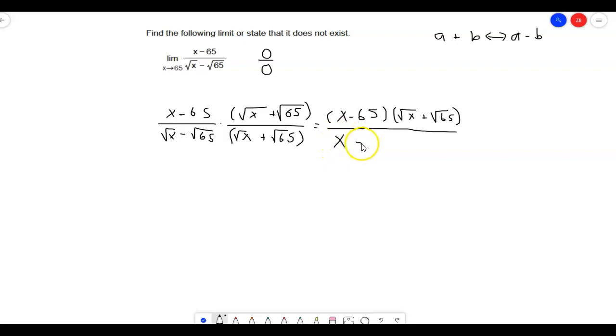And then we have a minus. And then the last term squared. So the square root of 65 times the square root of 65 is just 65. So hey, what do you know? We have a common term on the top and the bottom, which is x minus 65, which cancels out, just leaving us with the square root of x plus the square root of 65.